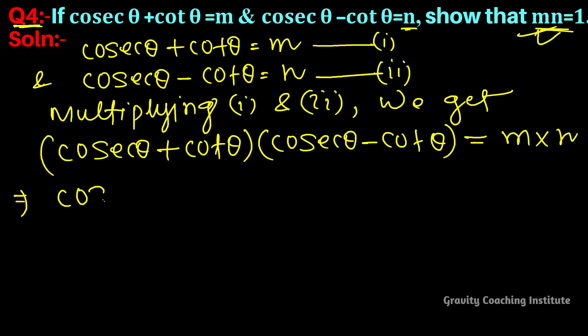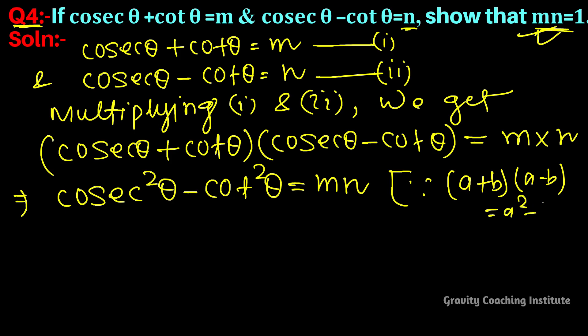According to that, this becomes cosec² θ - cot² θ = mn. Here we have used the identity: (a + b)(a - b) = a² - b².